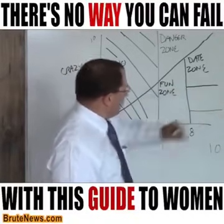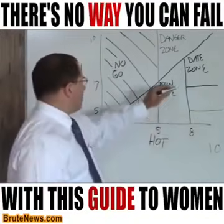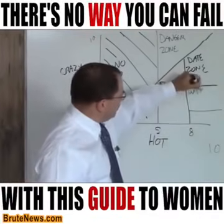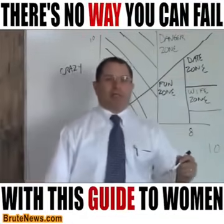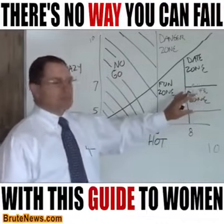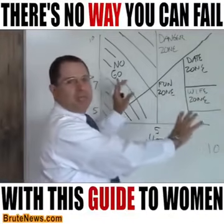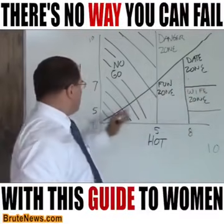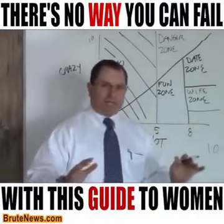Above an eight hot and between about a seven and a five crazy, this is your wife zone. When you meet this girl, you should consider a long-term relationship. This zone is not scaled to size — it's a representation and not an actual pie chart showing you how many of these people are out there. It's simply a representation of what you're after. You want five to seven crazy, above an eight hot. That's your wife zone.